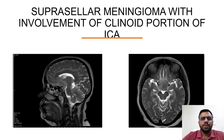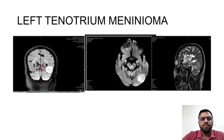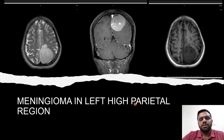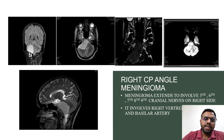Cases demonstrated include: a suprasellar meningioma with involvement of the clinoid portion of the ICA; a left tentorial meningioma; a meningioma in the bifrontal/hyperatrial region; and a right CP angle meningioma extending to involve the 5th, 6th, 7th, 8th, and 9th cranial nerves on the right side, involving the right vertebral artery and basilar artery.